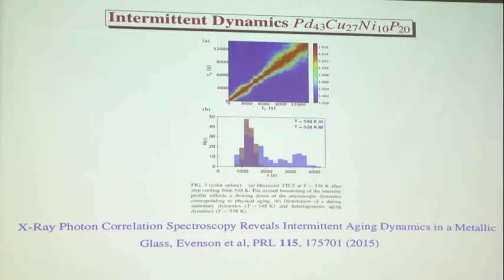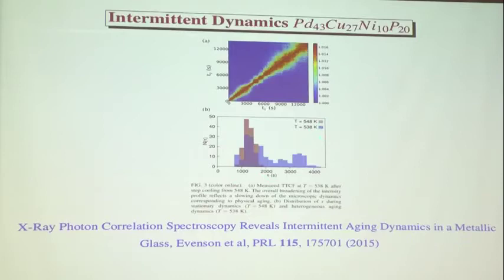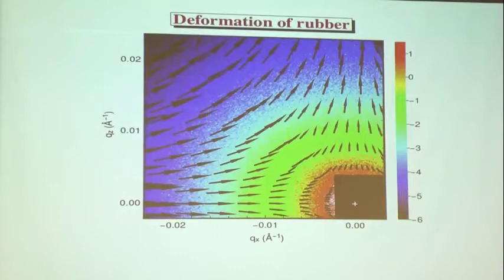A really beautiful experiment done by the group at ESRF looked at a metallic glass heated to a temperature where the viscosity is becoming real and measurable. Looking at the two-time correlation function again, you see intermittent dynamics — the glass hops into some local state, changes, and hops again. You get lots of information about how the glass transition is evolving. At low temperatures you see this intermittent dynamics as strain builds up and relaxes; at high temperatures everything is much more like continuously evolving with a single time constant.